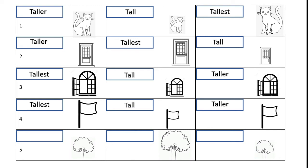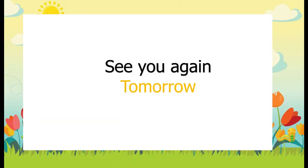Now let's finish with the last number for today. Number five, we have a tree. Find the tallest tree first and write it down: T-A-L-L-E-S-T. After that, compare between the two pictures — we have 'taller,' and the last one will be 'tall.' You're done! Excellent! I hope you're doing fine and great. Is it easy — a piece of cake, right? That's all for our session today. Tomorrow I'll see you again with the next thing to learn. Have a great day and goodbye everyone!